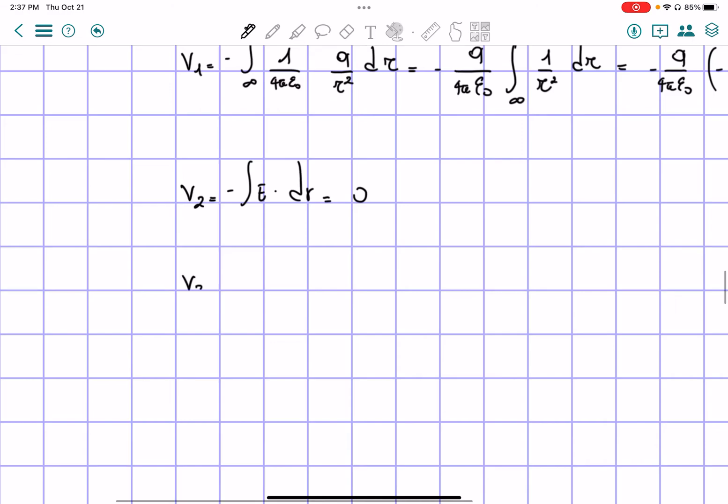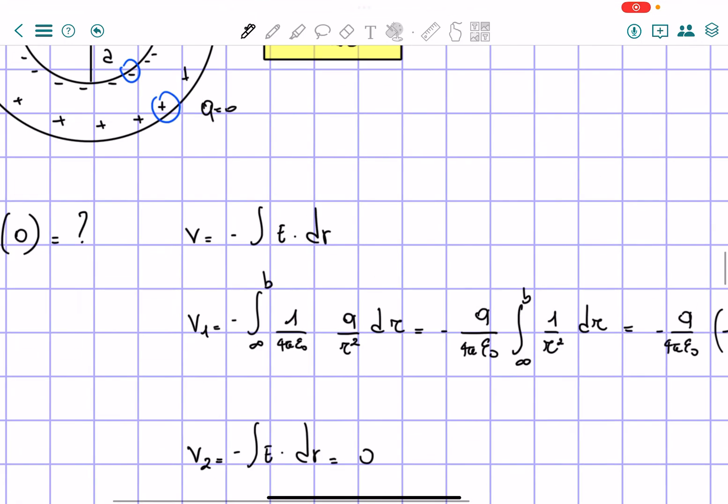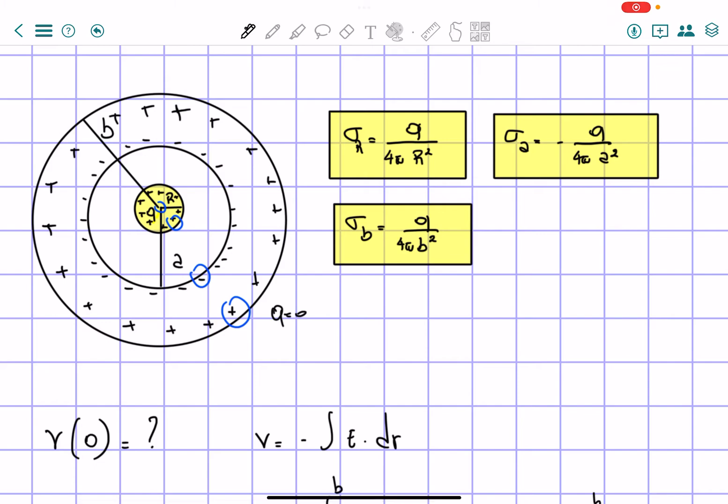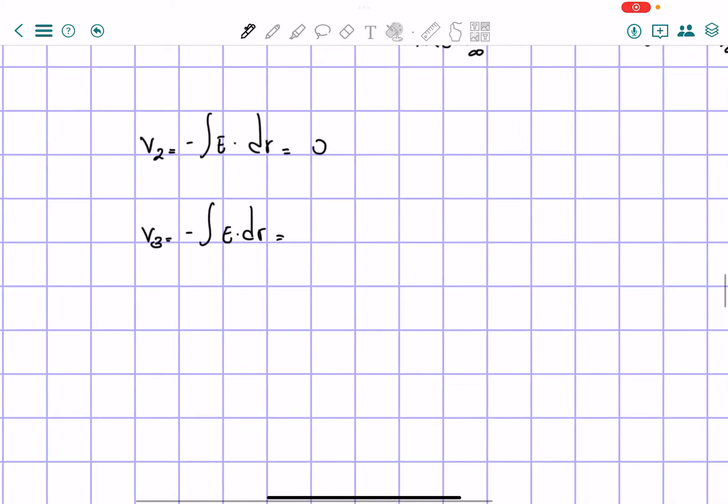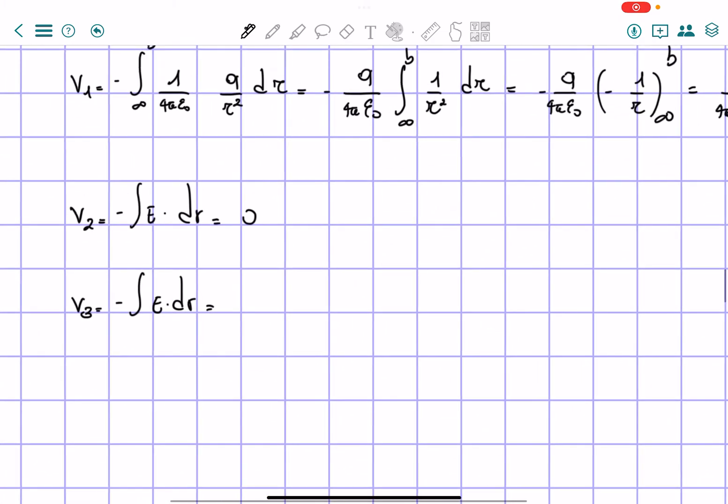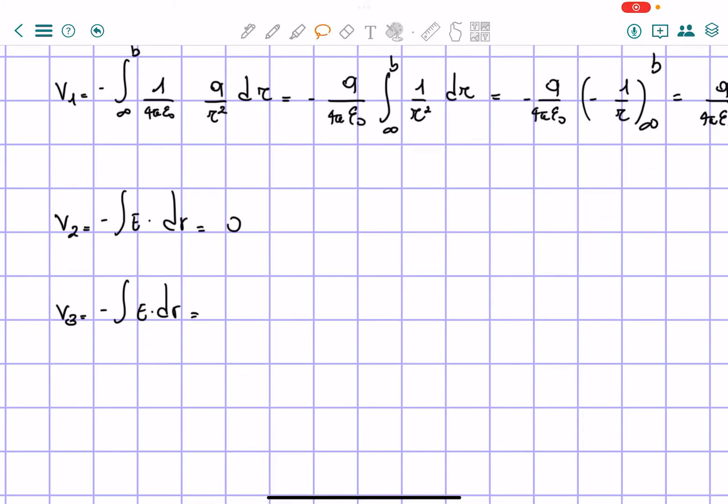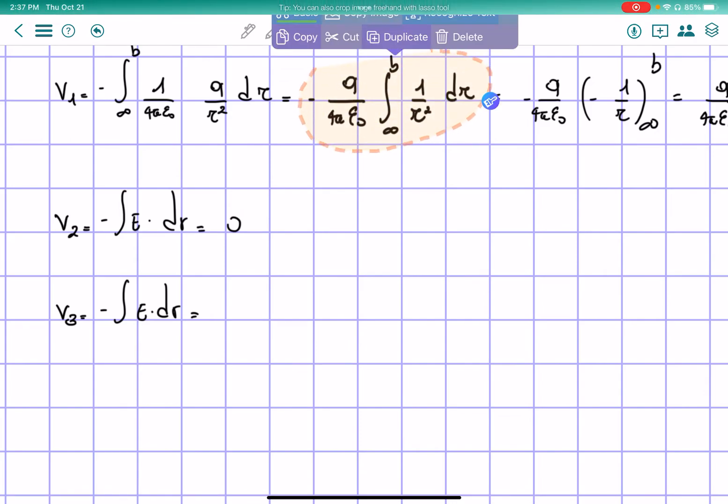V3 again instead, we have the same formula and we actually do have some charges on the electric field because the charges are on the outer rings. That means that the charge of course will be q again. So let's rewrite it pretty much like we wrote it here. But let's change the boundaries because now it won't be negative infinity and b but it will be going from a to capital R.